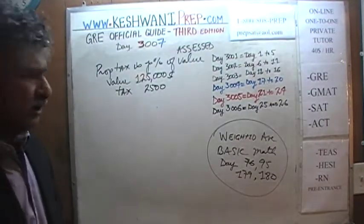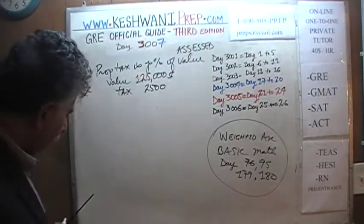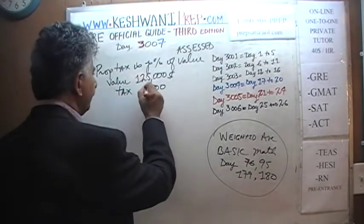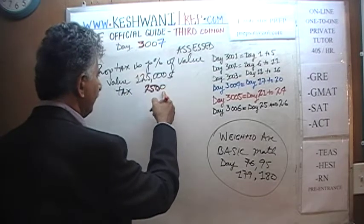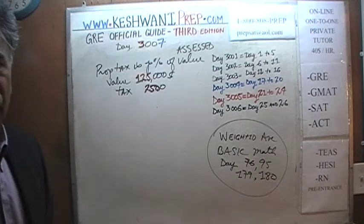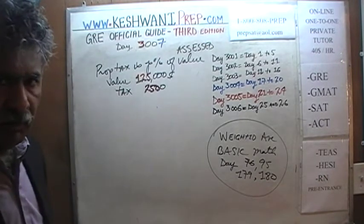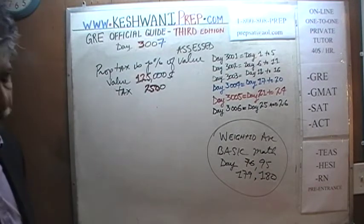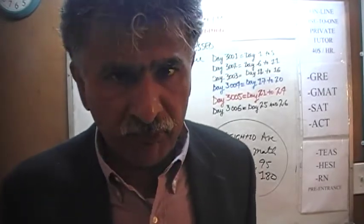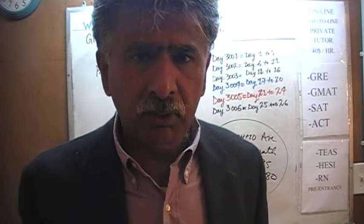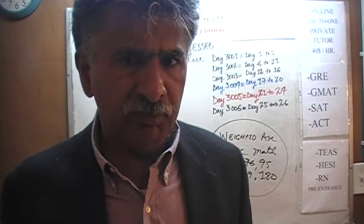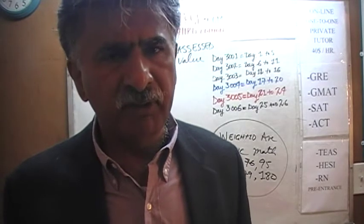You can see right away that $250,000 is exactly 2 times $125,000 — the tax rate is 2%. But if you were unable to see that, we can do all the calculation. However, these are quantitative comparisons — we are supposed to simply compare the two quantities, not compute anything.